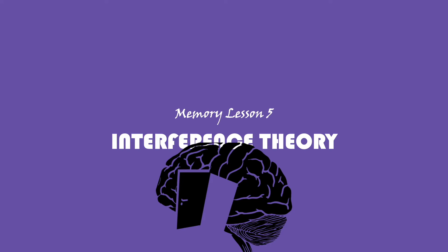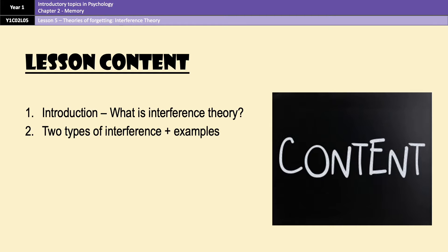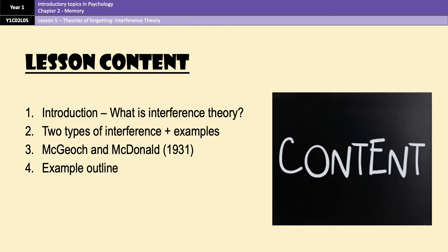Hello everyone and welcome back to another A-level psychology video. Today we're looking at memory lesson 5, which is interference theory. We're going to cover a load of stuff over the next 15 minutes or so. If you're looking for something specific — evaluation points, research, exam questions — you can use the timestamps in the description to jump straight to that bit, or you can just watch it all the way through; it's not going to be a very long one.